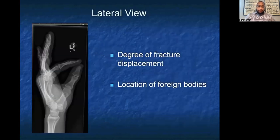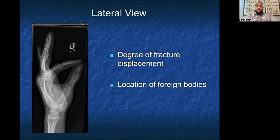The lateral view often shows the index finger and thumb touching. It's very helpful for giving more information about the degree of fracture displacement — is it displaced enough that conservative management isn't appropriate, and should I refer to a surgical orthopedic colleague? It's also very helpful for locating foreign bodies.